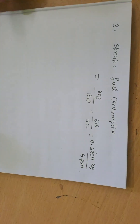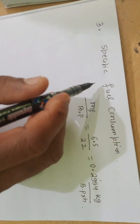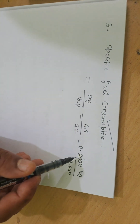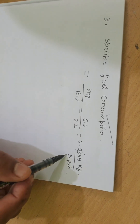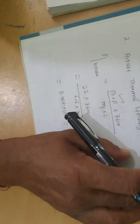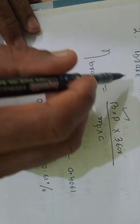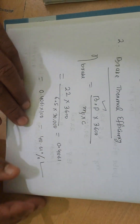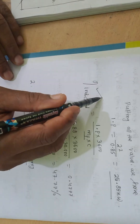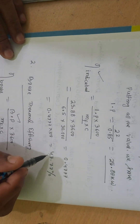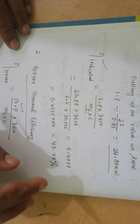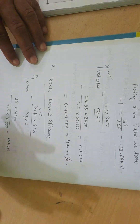Specific fuel consumption is equal to 0.2954 kg per BP per hour. So brake thermal efficiency is 40.61%, indicated thermal efficiency is 47.77%. I will now solve another problem.